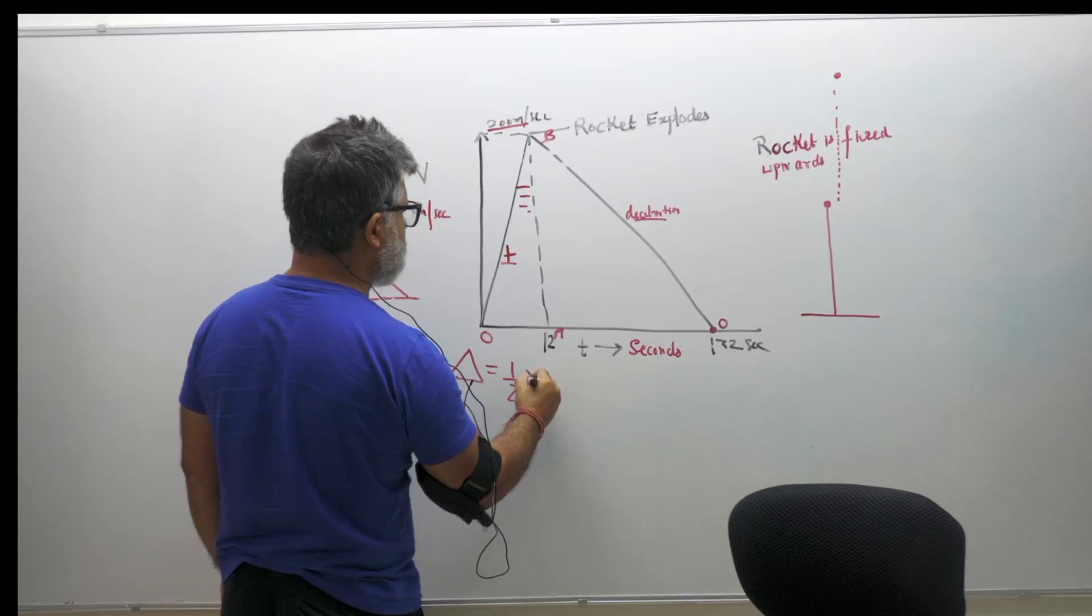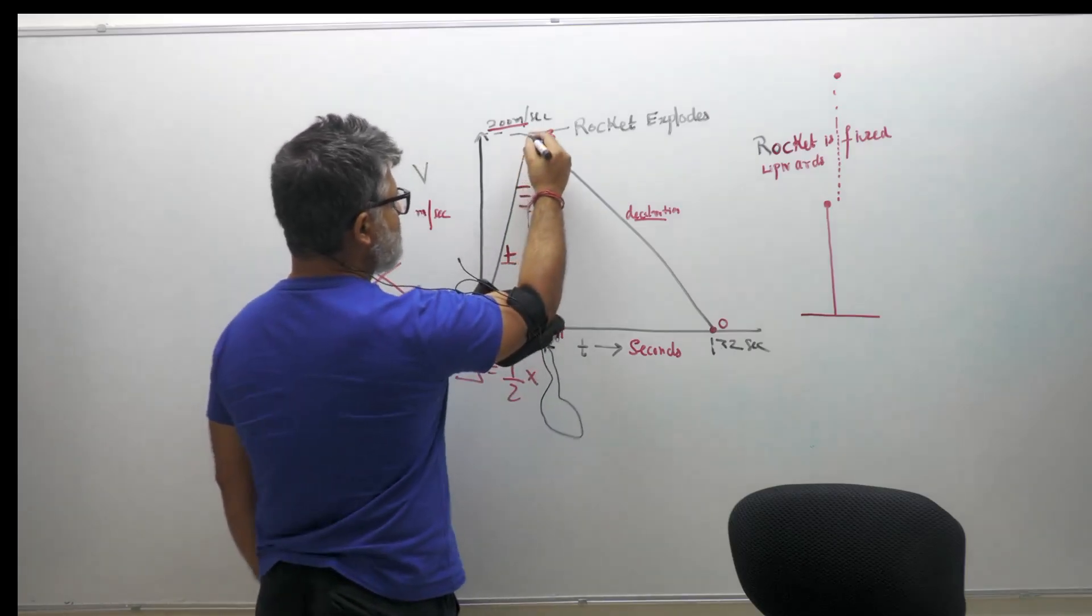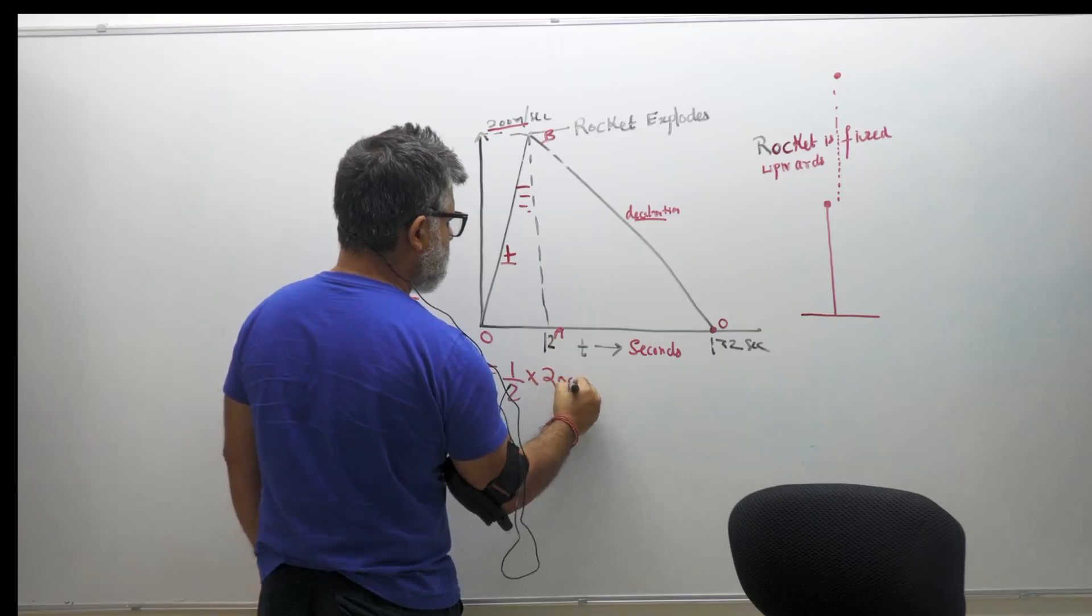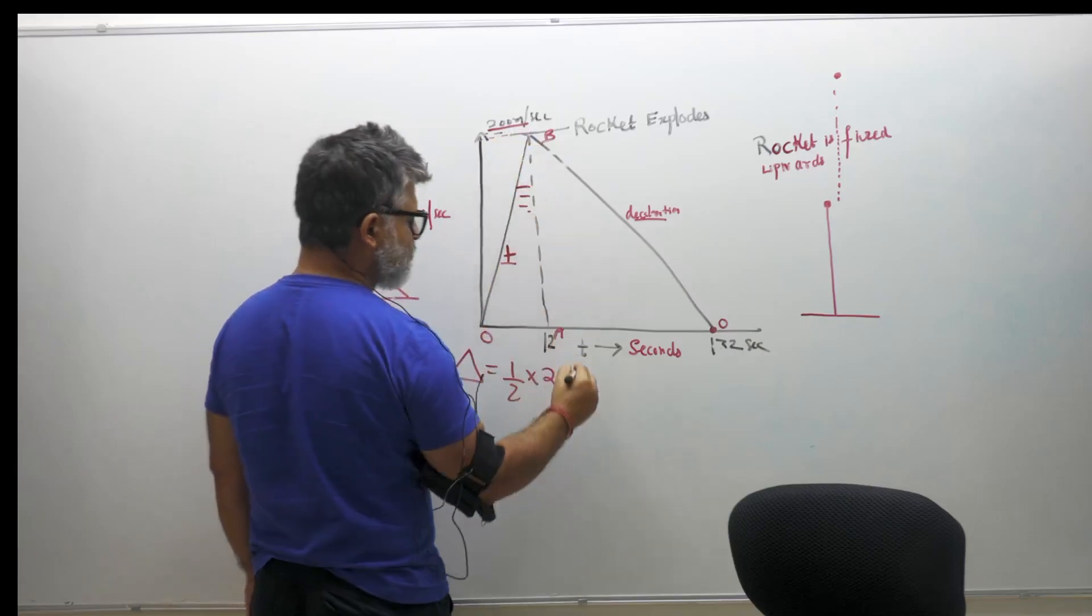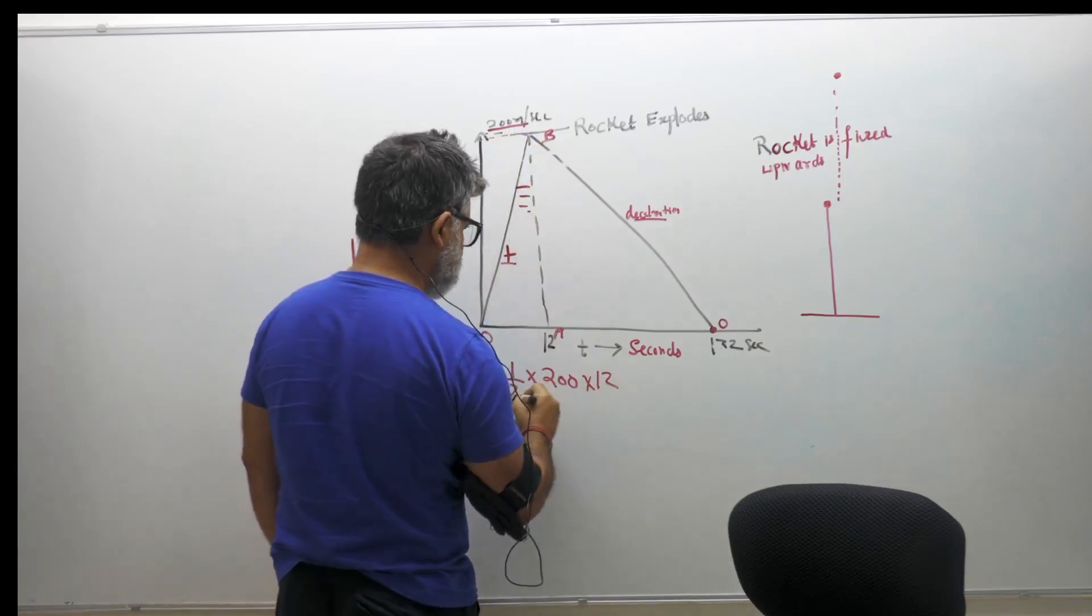...is half into the base. The height is 200. When it explodes, the velocity is 200, it is given in the question, into 12. So this equals 1200. So the height attained is 1200.